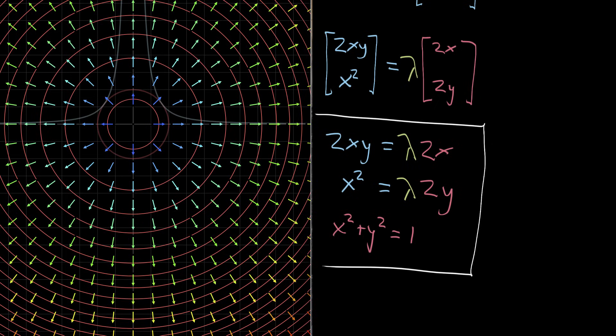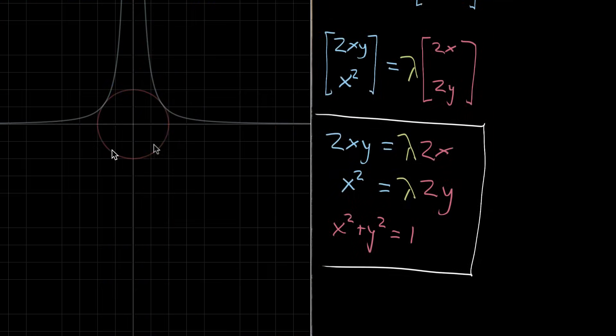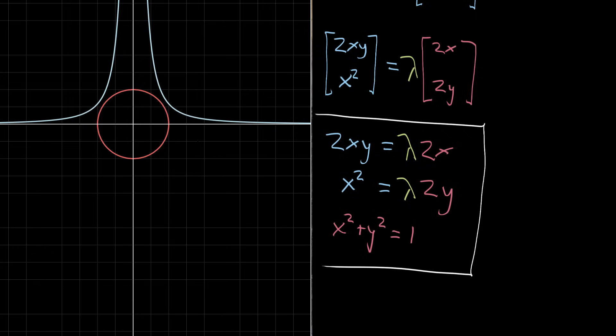So these are the three equations that characterize our constrained optimization problem. The bottom one just tells you that we have to be on this unit circle here. We have to be on this unit circle. And then these top two tell us what's necessary in order for our contour lines, the contour of f and the contour of g, to be perfectly tangent with each other.